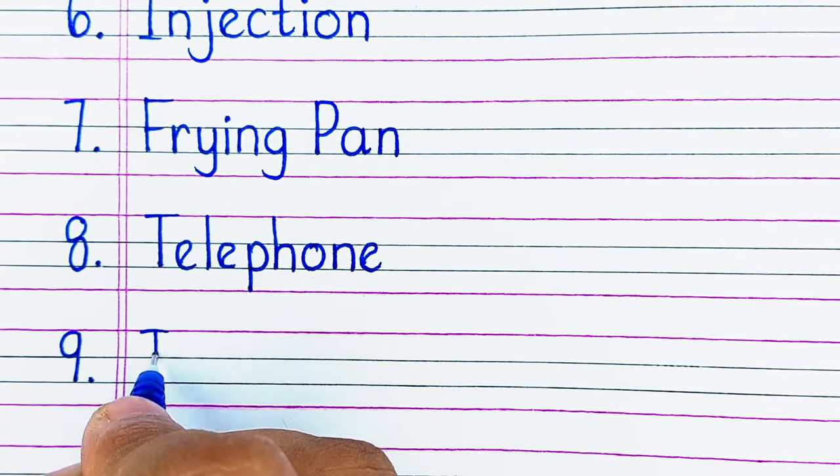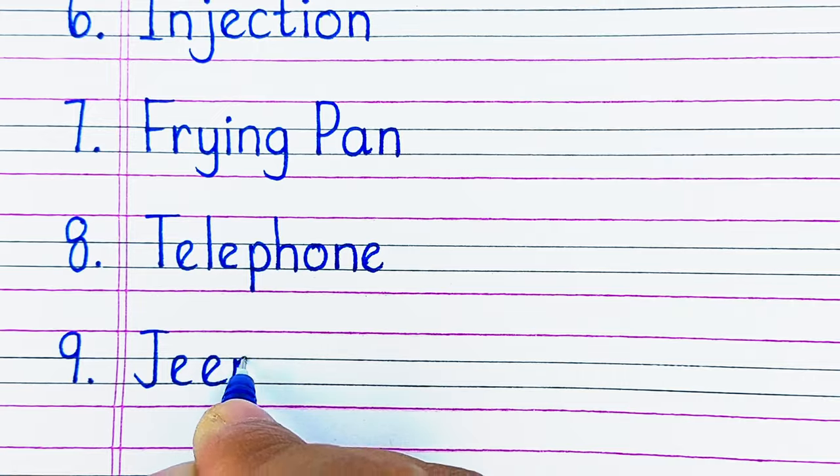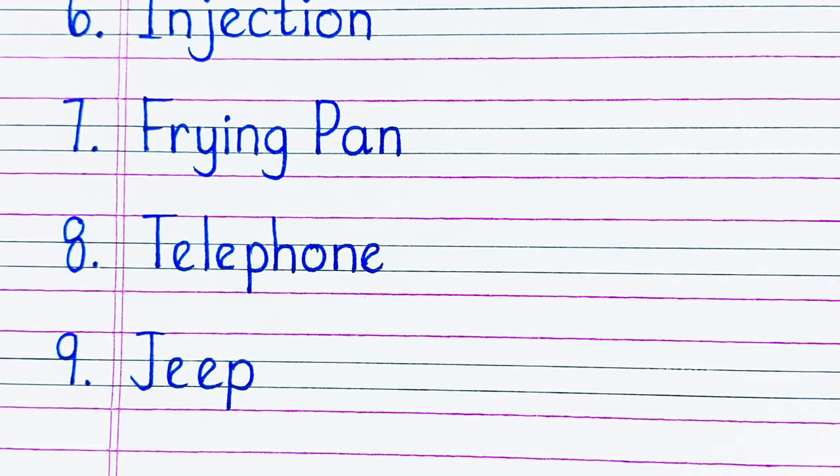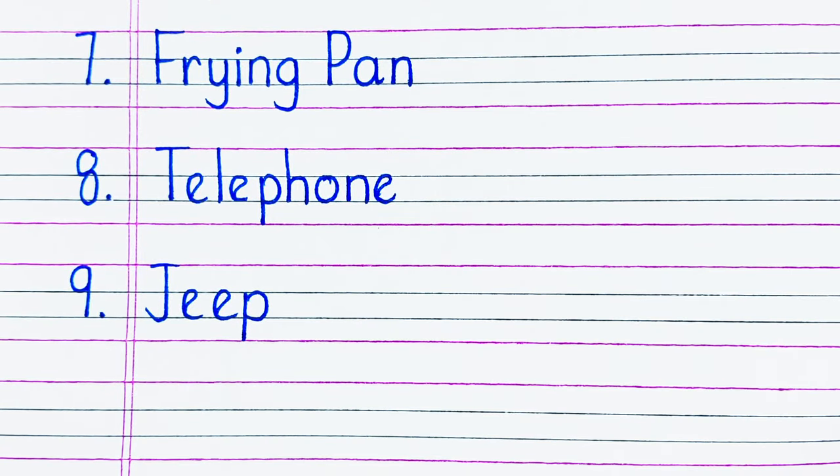On number 9, we have a type of vehicle on which we travel, i.e. a jeep. Jeep is spelled as J-E-E-P.